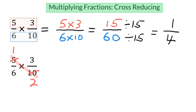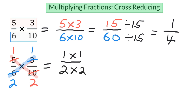And then we're going to do the same thing diagonally across the opposite direction — in blue this direction. So the greatest common factor for 6 and 3 is 3. 3 divided by 3 is 1, and 6 divided by 3 is 2. Now if we rewrite the numerators, we get 1 times 1 as the new numerator, and 2 times 2 as the new denominator. 1 times 1 is 1, and 2 times 2 is 4. You can see that we got the same answer here as we did before, but the cross-reducing strategy is much more efficient, and you get to work with more manageable numbers.